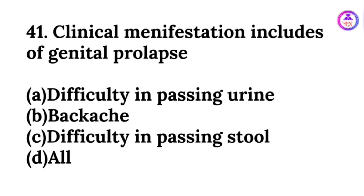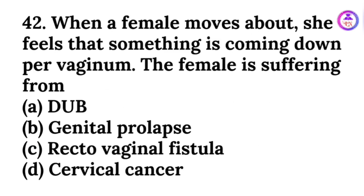Clinical manifestations of genital prolapse include difficulty in passing urine, backache, and difficulty in passing stool — so all of the above. When a female moves about and feels that something is coming down per vagina, the female is suffering from genital prolapse.